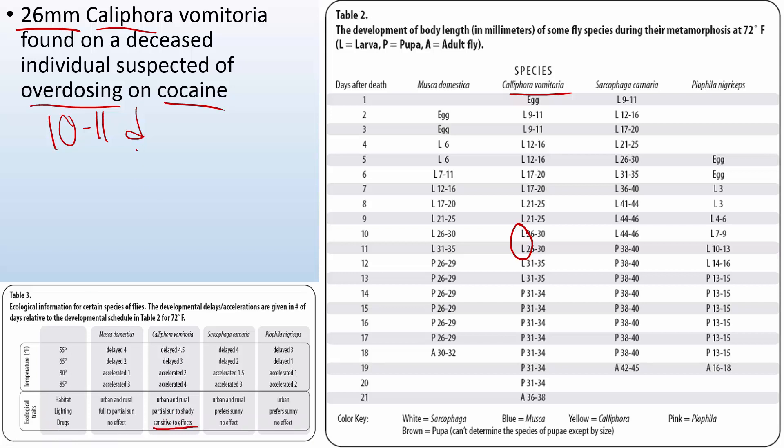So what I would say is all right, well I can't really necessarily quantify how much of an effect the cocaine had. But I would probably say then you could say at most it would be 10 to 11 days. Because the cocaine is a stimulant, it's going to increase the metabolism of the maggots. They're going to grow quicker. So that's what my estimate would be. And that's how I use the charts to estimate post-mortem interval.